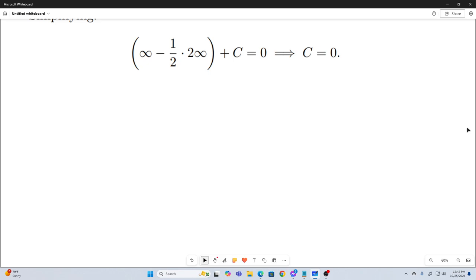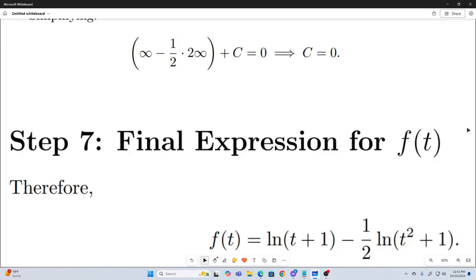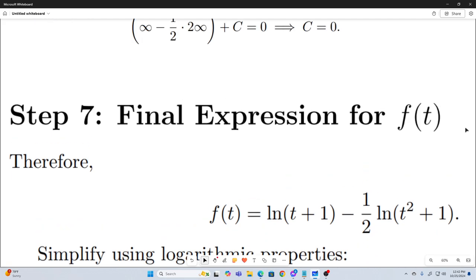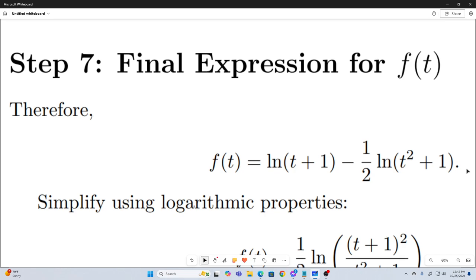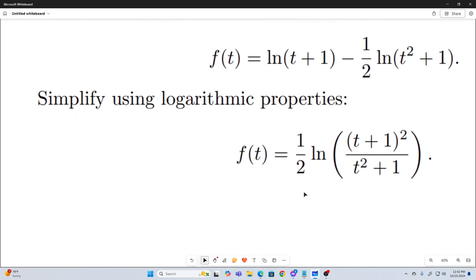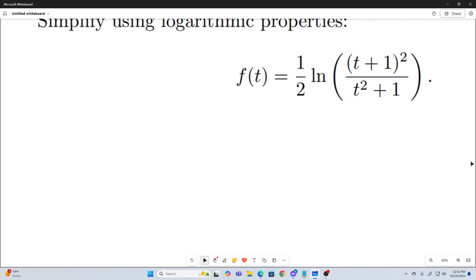All right. So now we have our final expression for f of t. We know that our c is equal to zero. So it just drops out. And now this is our f of t right here. So we can simplify that, simplify that using the properties of logarithms. That's just going to be one half natural log of t plus one squared over t squared plus one. That's it. Now we just plug in two and we're done.